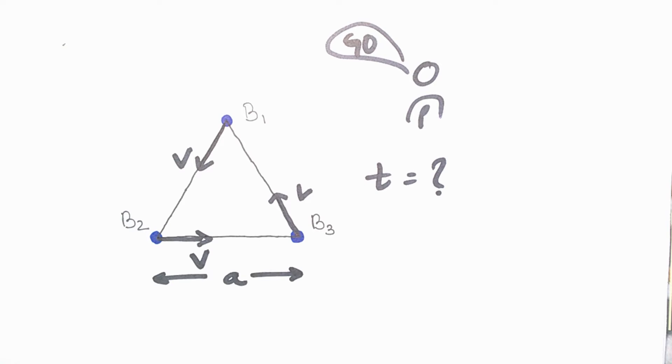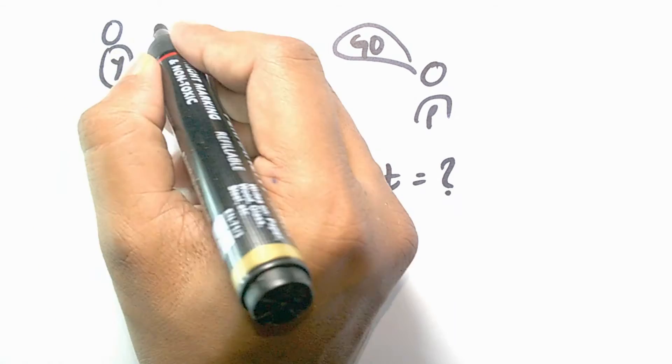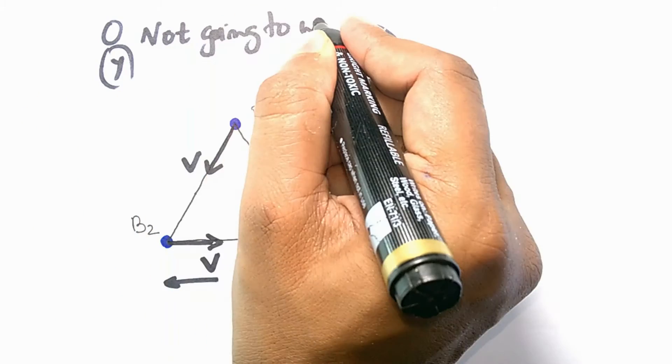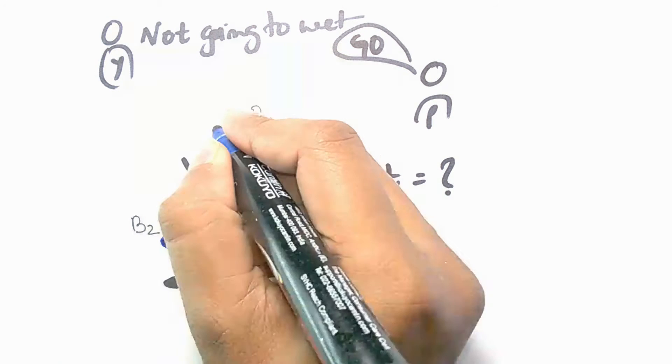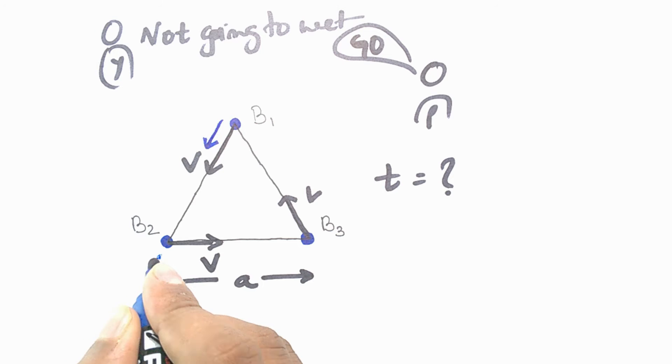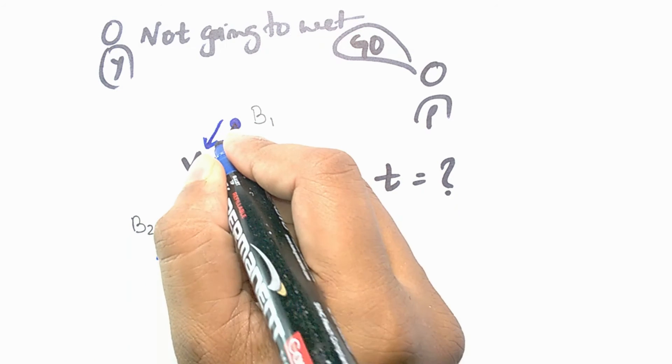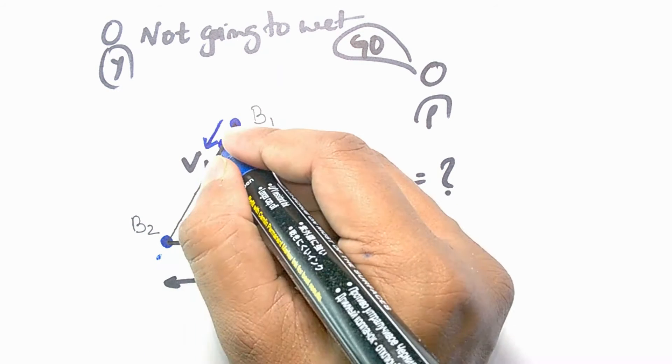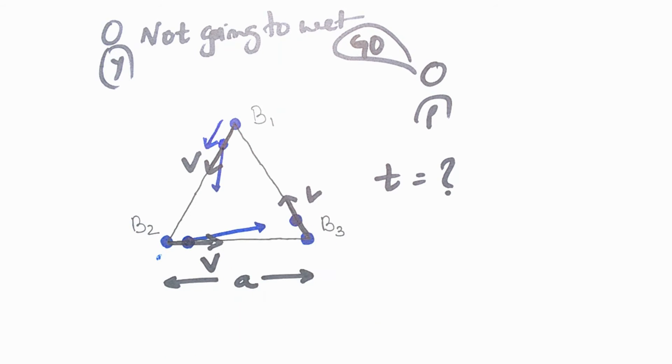I know that most of you are going to think that they are not going to meet ever. But if you're listening to me carefully, then you might have noticed that I said body one is moving towards body two—it's not that body one is moving towards the second vertex.